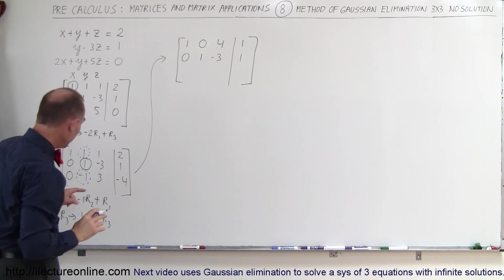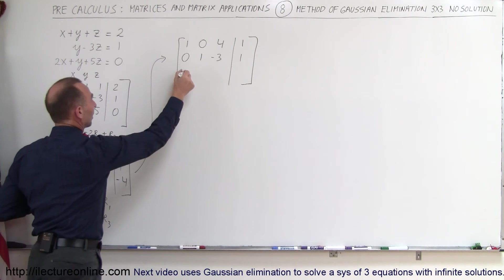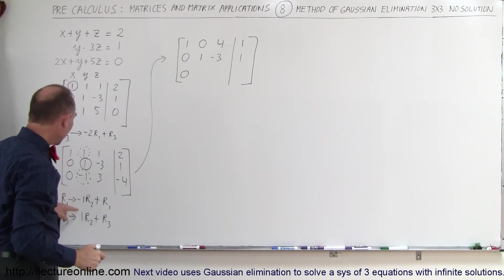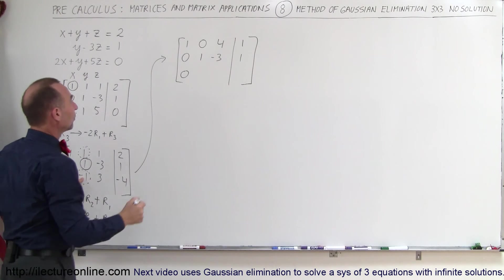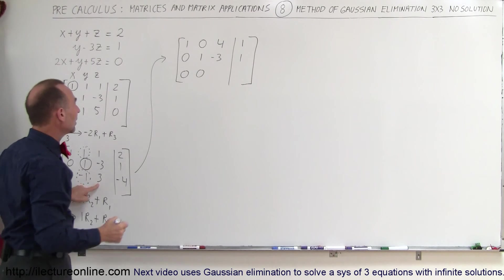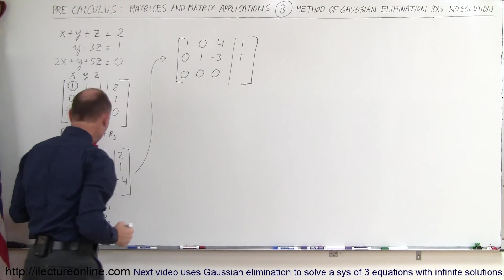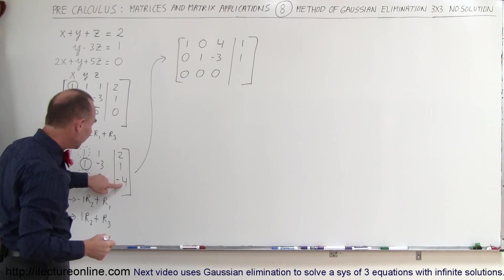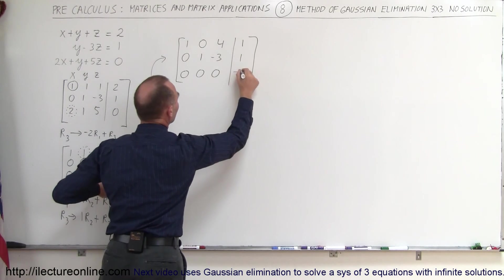For the third row, this will still be a 0. That doesn't change. We have 1 times 1, added to negative 1 gives me 0. 1 times a negative 3, added to 3 gives me 0. And 1 times 1, added to negative 4, gives me a negative 3.